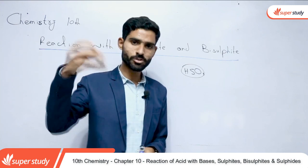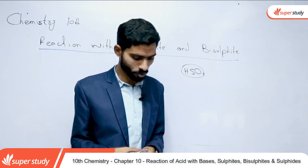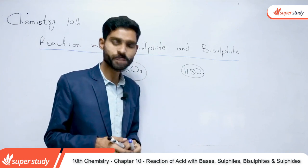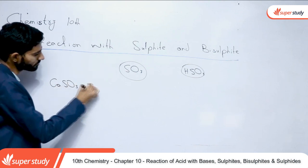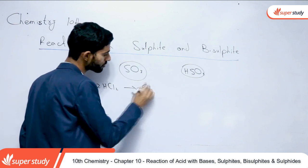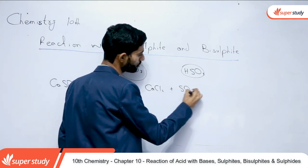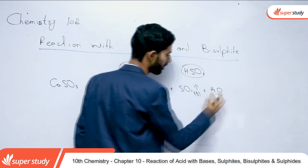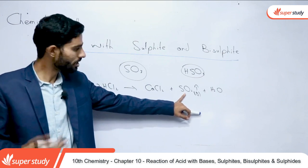Ab reaction dekhna hai ki reaction is tarah se hota hai. Is reaction ke dauran bhi normally hota hai ki jab acid mein sulfide ya bisulfide dalte hain, to effervescence hoti hai aur koi na koi gas evolve hoti hai. Woh gas kaun si hai, main aapko explain karunga. Example ke liye: calcium sulfide ka reaction with hydrochloric acid. CaS + HCl → CaCl₂ + SO₂ (gas) + H₂O. Effervescence sulfur dioxide gas ki hogi.